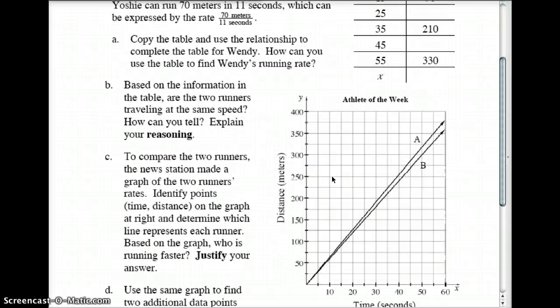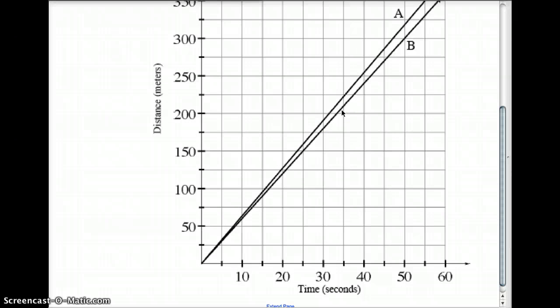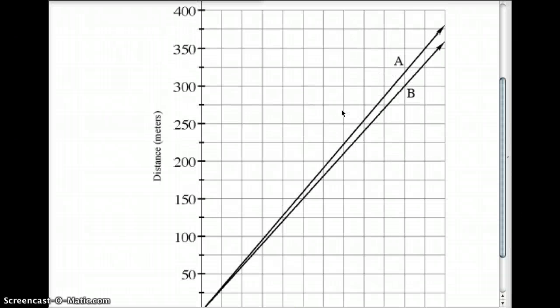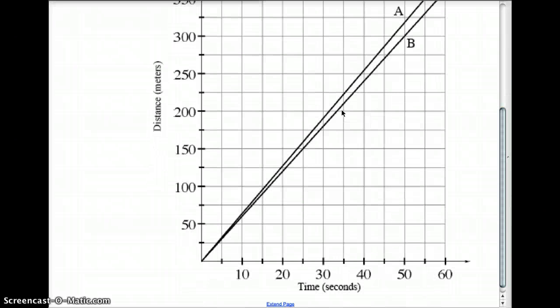So Yoshi can run 70 meters in 11 seconds and we are supposed to figure out which one runs the faster. So here's a graph right here, but it's not quite big enough, it's hard to read. So I've got a different graph to go to. One of these runners is Wendy and one of them is Yoshi.